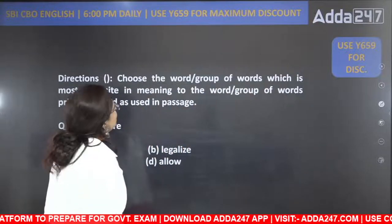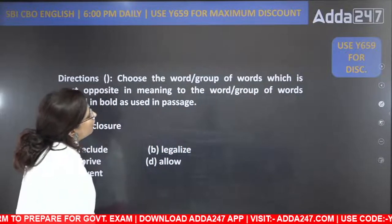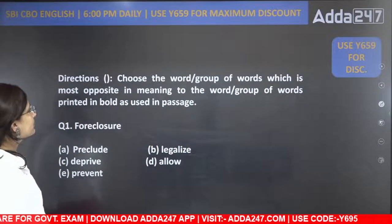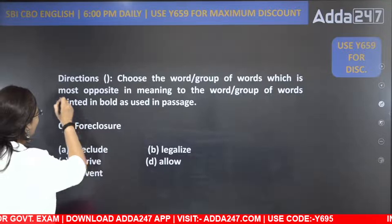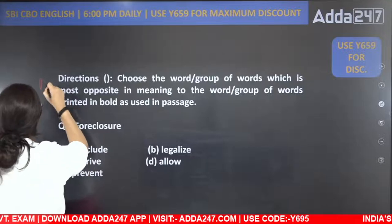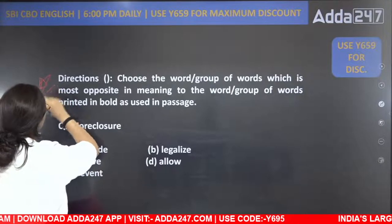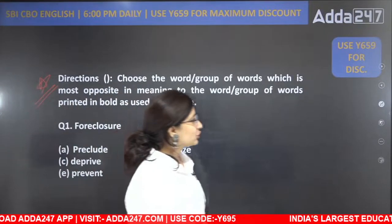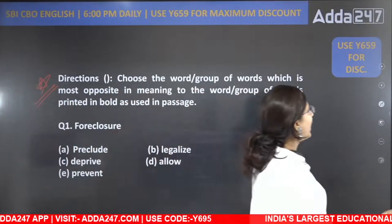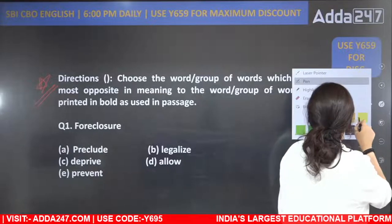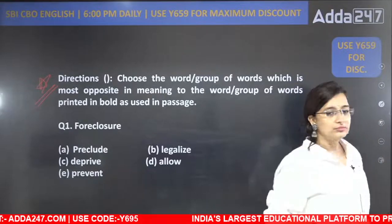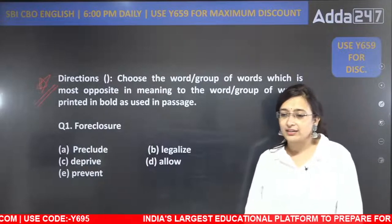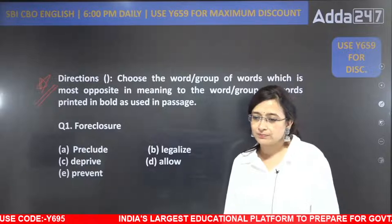Let's see. Choose the word or group of words which is most opposite in meaning. Please read the direction first — yaha pe jo direction diya hua hai, aap ye direction padhiye aur bataiye kya likha hua hai.